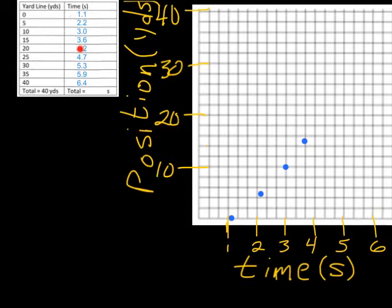After that, we got 4.2 and 20. So, 4.2 is going to be right in here. And, then 20 is right here. So, we go to where those two lines match up, which will be right there.